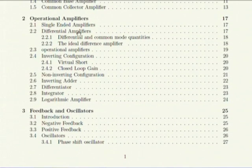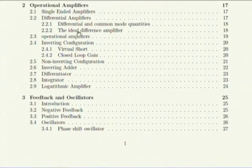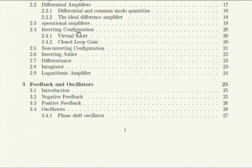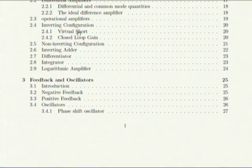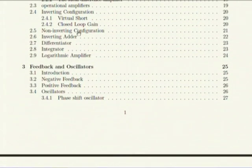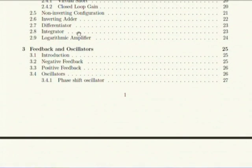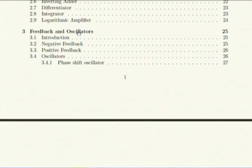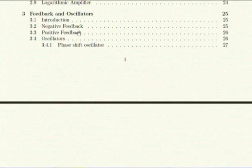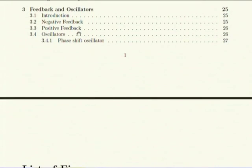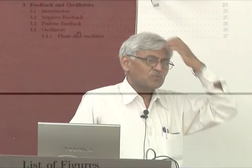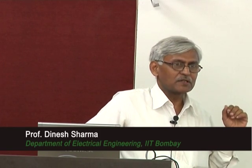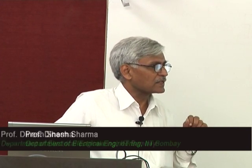After that there are single-ended amplifiers, differential amplifiers, some definitions of differential and common mode quantities, operational amplifier and various configurations, including virtual short, the non-inverting configuration, inverting adder, differentiator, non-linear integrator, and non-linear uses of op amp like a logarithmic amplifier. Finally, feedback and oscillator: first negative feedback, then positive feedback, and finally oscillator — as an example, the phase shift oscillator. This is my old notes which I had used for this course itself.